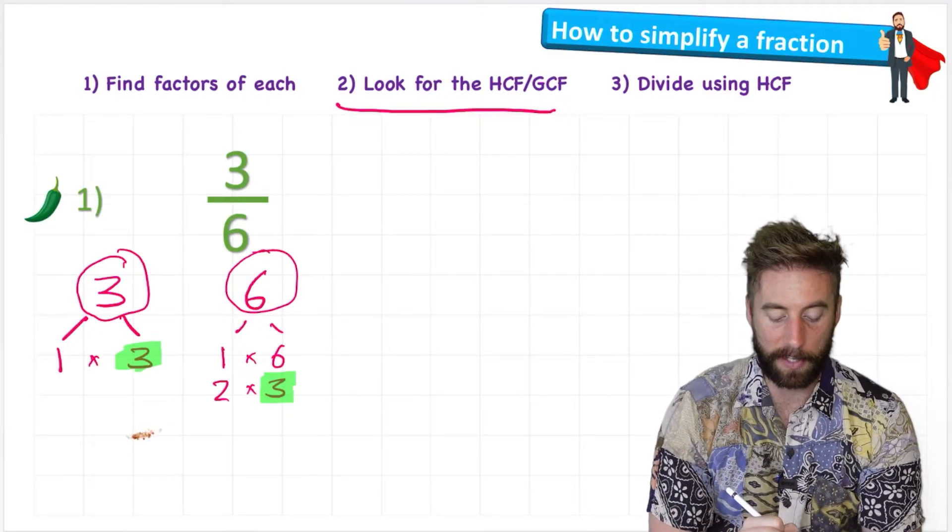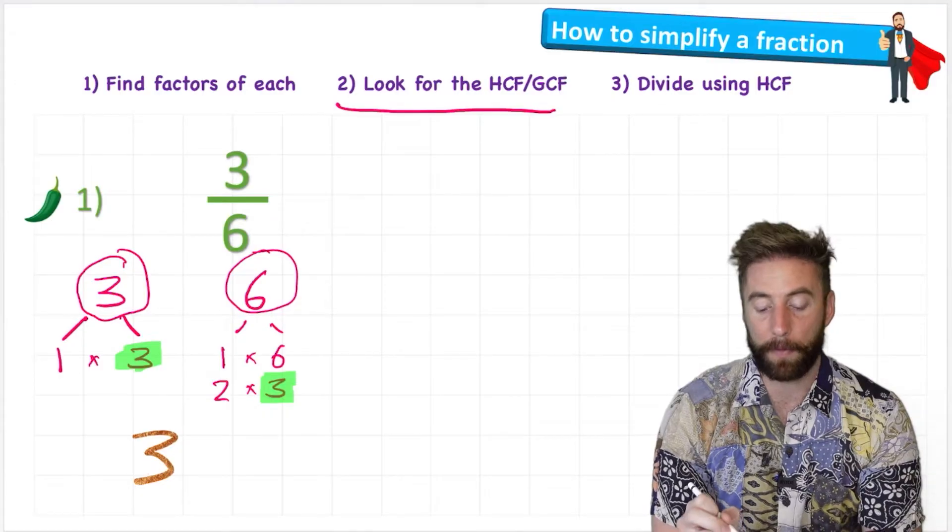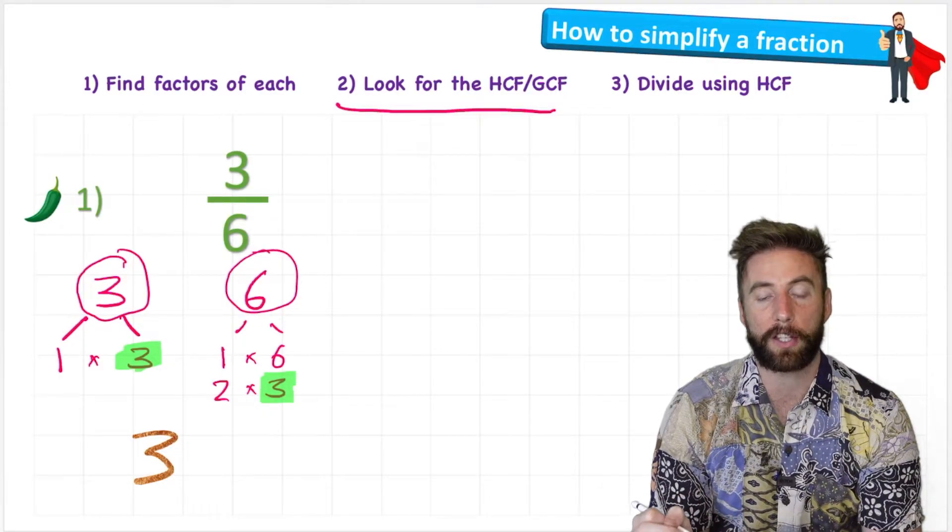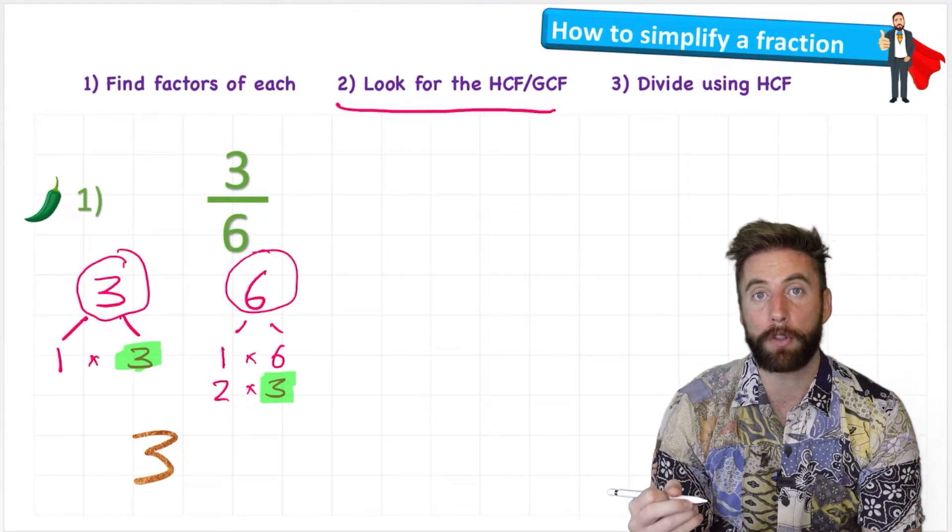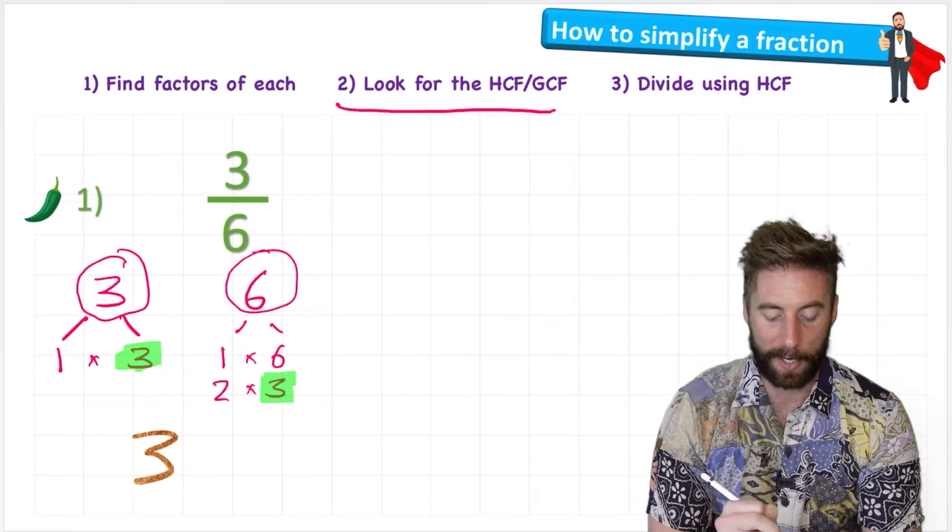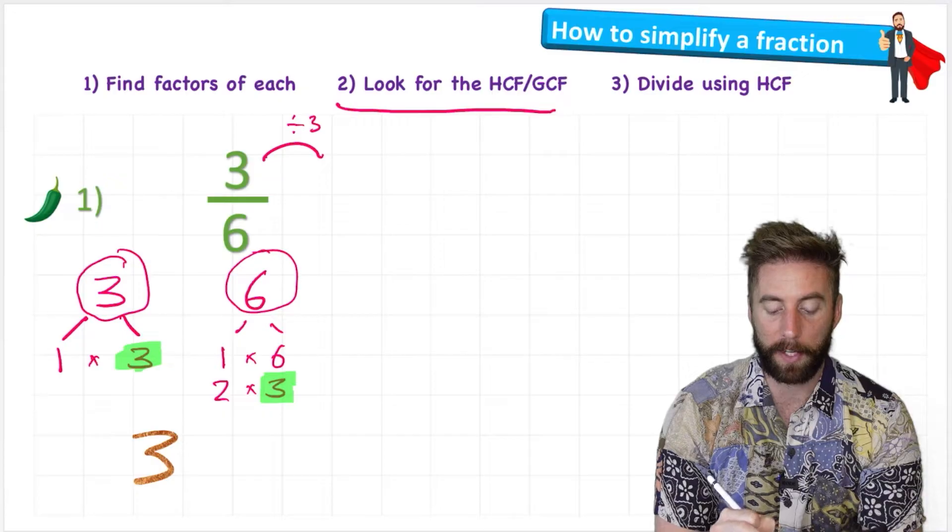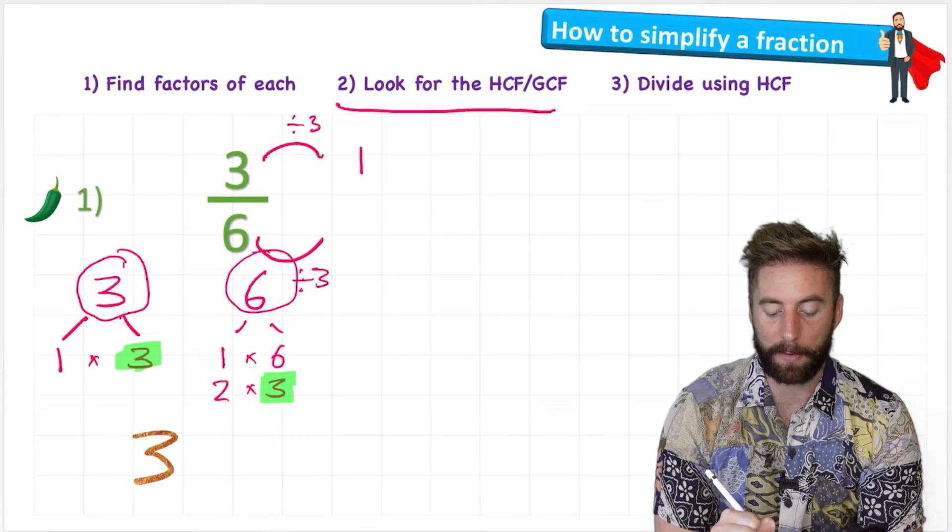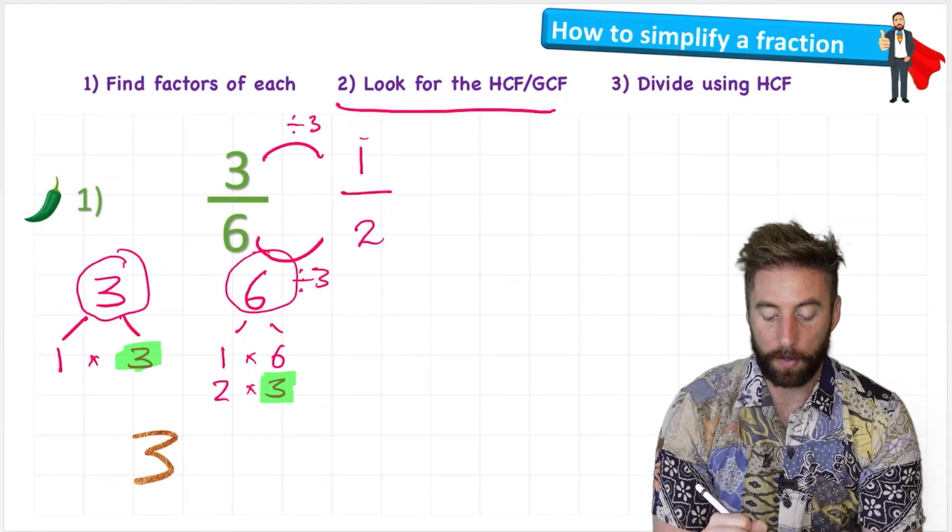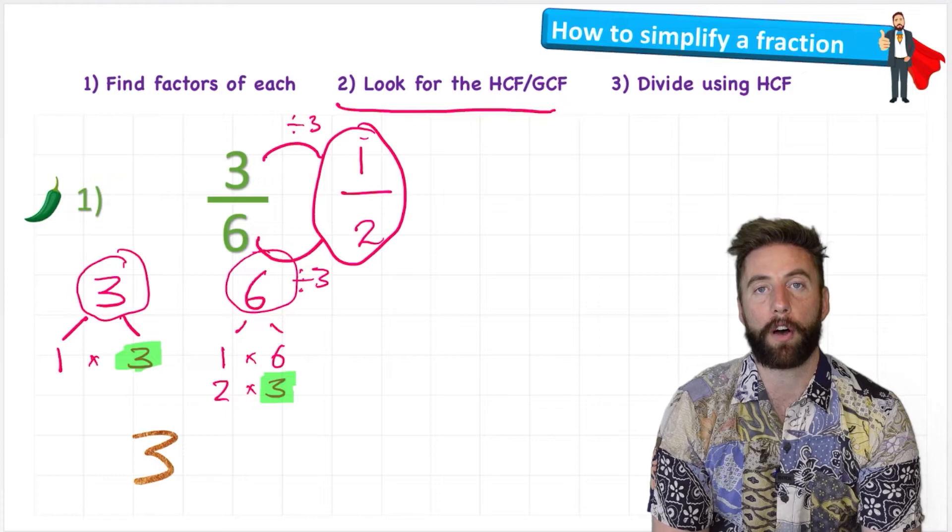So in this case our highest common factor is three. Now step three says to divide using this highest common factor. So I'm going to divide both my numerator and my denominator now by this three. So three divided by three is one, and six divided by three is two. And look what we've got to - we've got to our one half. And as we saw in our fraction wall, one half was our simplified fraction.